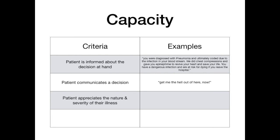Criteria number three: the patient appreciates the nature and severity of their illness. The best way to assess this is to point blank ask the patient, 'Tell me what might happen if you leave the hospital right now.' This is essentially the teach-back method — you've already told them the prognosis in criteria one, now you need to confirm they understand the severity. In this example, if you ask the patient what might happen and they can't tell you that it's possible they die, get a really bad infection, or their heart stops, then they lack capacity.